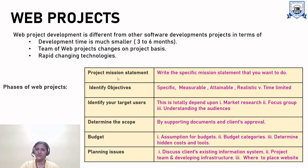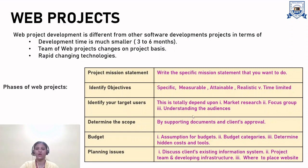The phases of web projects. The first is the project mission statement, which includes the specific mission statement you want to accomplish. Then, identify objectives, which must be specific, measurable, attainable, realistic, and time-limited. Identify the target user, which depends on market research and focus groups, and understanding the audience. Determine the scope with supporting documents and client approval. Budget involves assumptions of budgets, budget categories, and determining hidden costs and tools. Planning issues discuss the client's existing information systems, project team, and developing infrastructure. Finally, determine where to place the website.